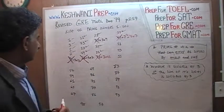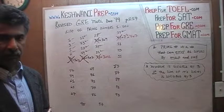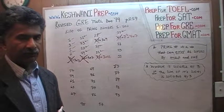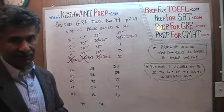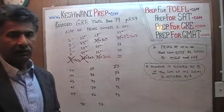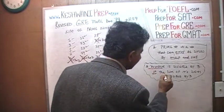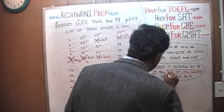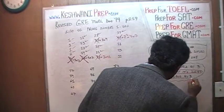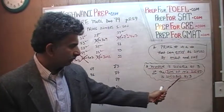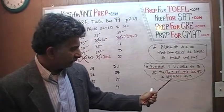What about 51? 51 is a tricky one to see. Here is a quick check: when you come across an odd number and you are asked to determine whether or not it's a prime number, the very first test you should do — ask yourself: is this number such that the sum of its digits is divisible by 3? Because if the sum of the digits is divisible by 3, then the number itself is divisible by 3.